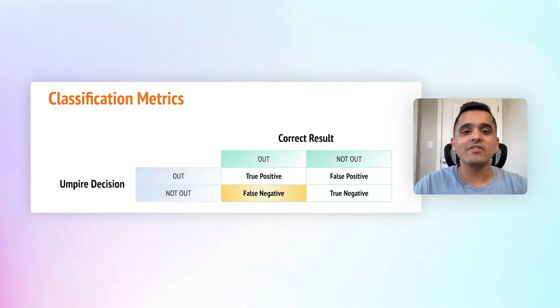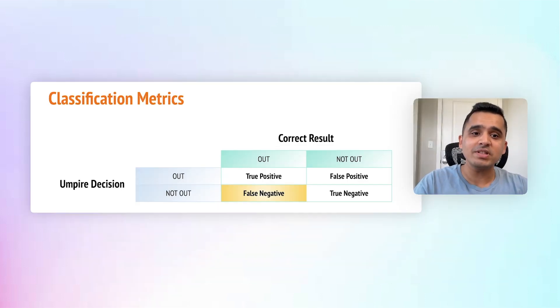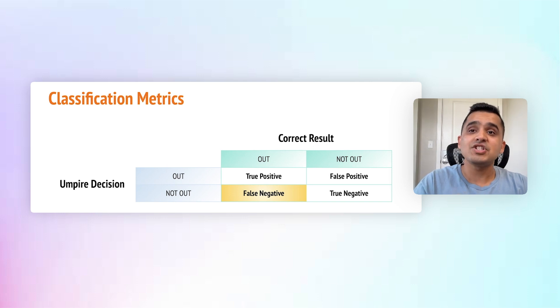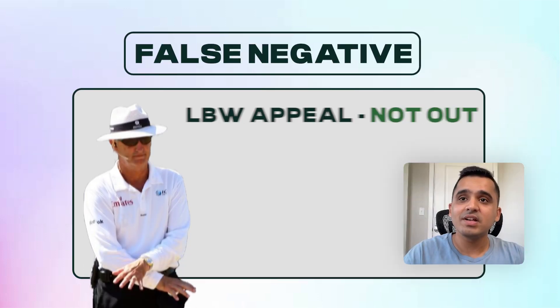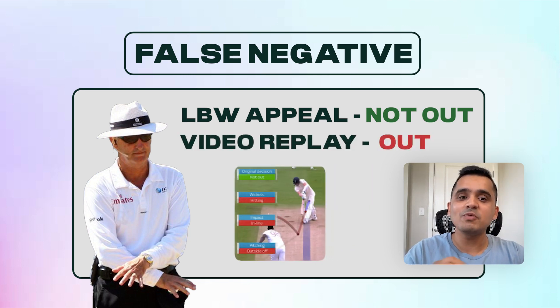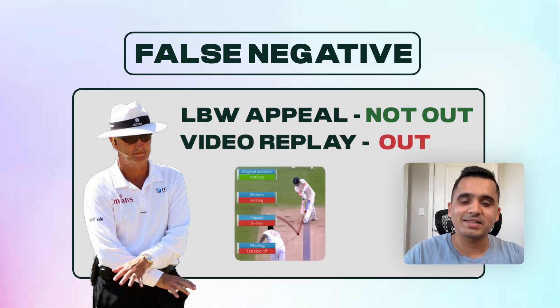And lastly, a false negative is when you say not out, but they should have been out. That is, you declared the player not out assuming the ball is not hitting the stumps, but the DRS video replay shows otherwise.